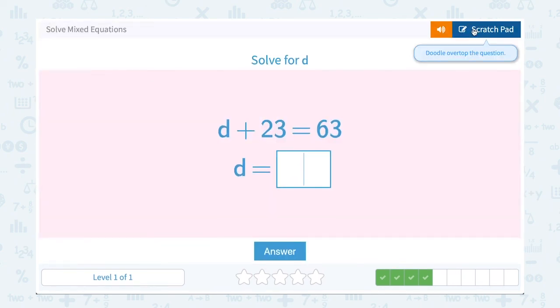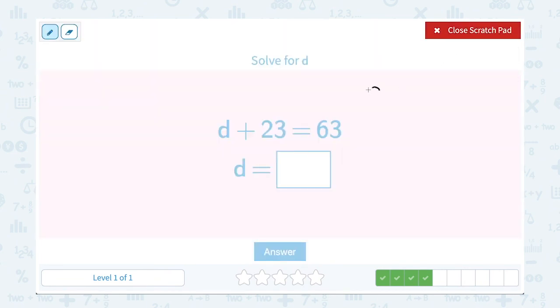Solve for D. D plus 23 is equal to 63. I'm going to rewrite my equation, D plus 23 is equal to 63. To get D by itself, I want to do the opposite or inverse. The opposite of adding 23 is subtracting 23. So I'm going to subtract 23 on both sides. I'm going to cancel this out. And 63 minus 23 gives me 40. You can check that even with just mental math. 40 plus 23, does it give me 63? Yes, it does.